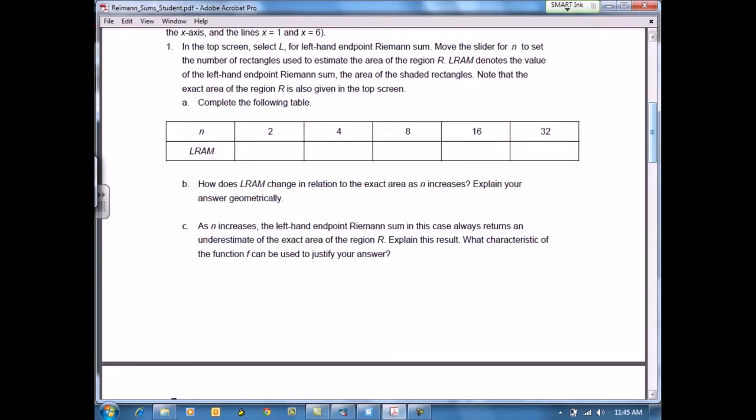One of the important parts of this student document is this table in which students will use the TNS document to find the approximate area using 2 rectangles, 4 rectangles, 8 rectangles, 16 rectangles, and 32 rectangles. I will now show you how to use this TNS document to accomplish this.